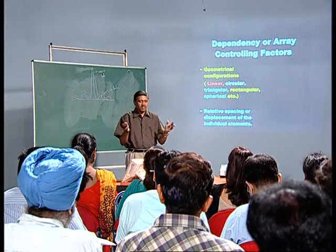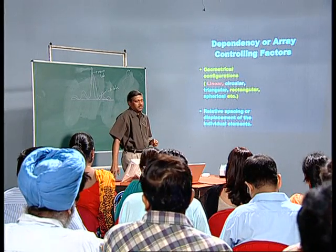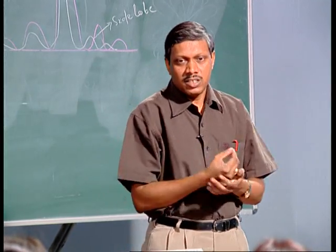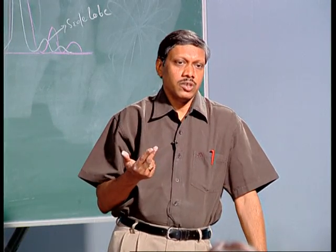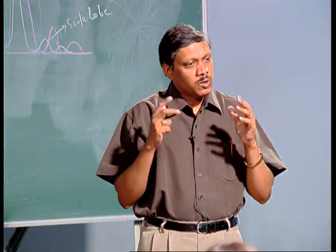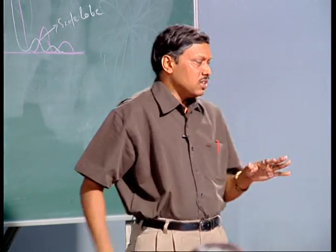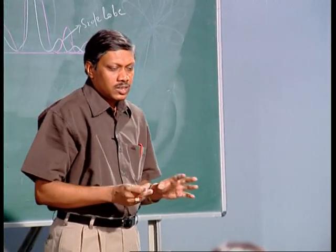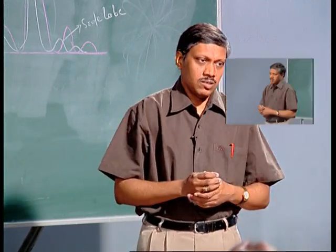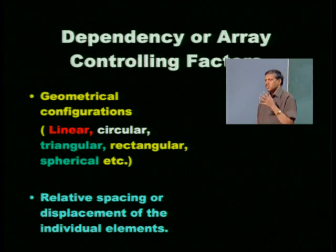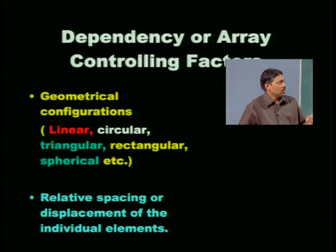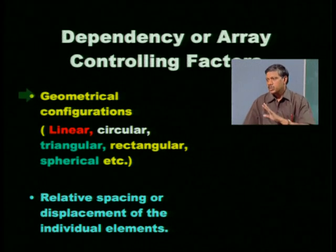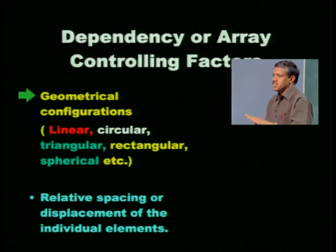When bringing many elements together, you cannot simply connect them one after another — it must be done with proper controlling parameters that govern the total performance of the array. The controlling factors for array performance include: the directive gain, the radiation pattern, the polarization, and the orientation of the beam. The first controlling parameter is the geometrical configuration.